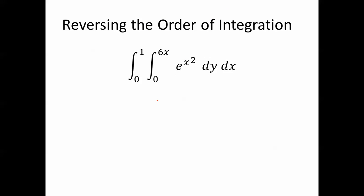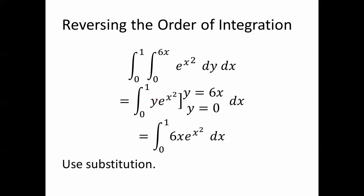So here's our new integral. When we integrate with respect to y, notice what we get, y e to the x squared. We can do that. We can integrate e to the x squared with respect to y. That's just y e to the x squared, as y goes from 0 to 6x. So plug in 6x, and we get 6x e to the x squared. Plug in 0, and we get nothing. So now we have an integral from 0 to 1 of 6x e to the x squared dx.